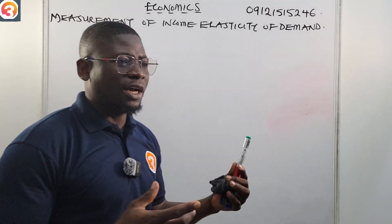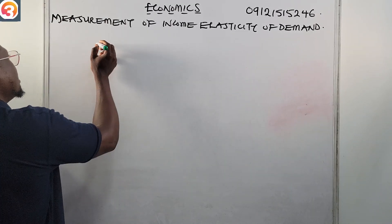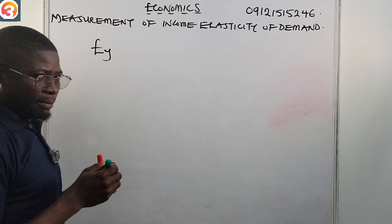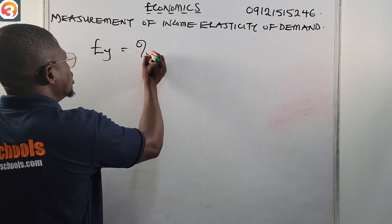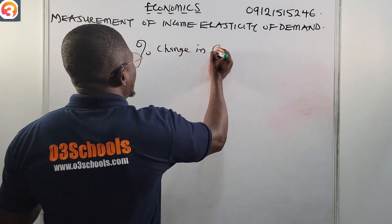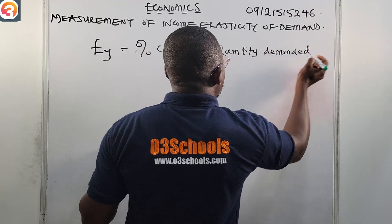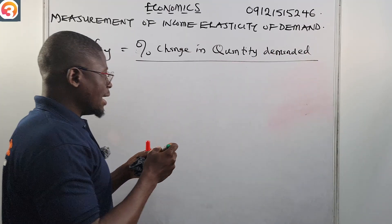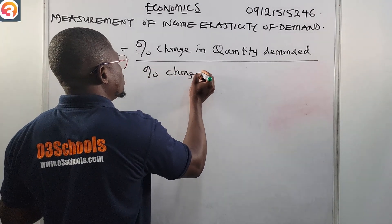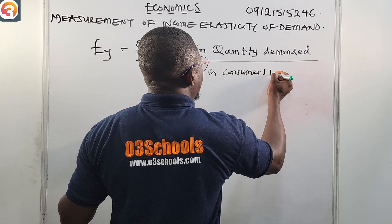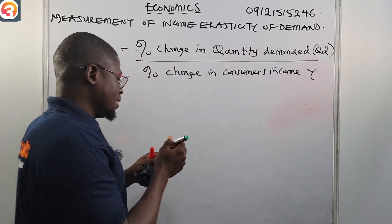Now let us talk about the measurement of income elasticity of demand. We represent income elasticity of demand with EY, and EY equals the percentage change in quantity demanded, all over the percentage change in consumer's income.